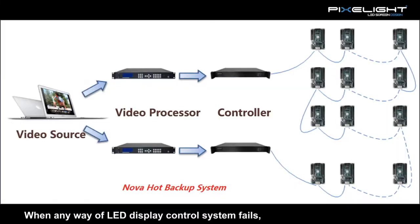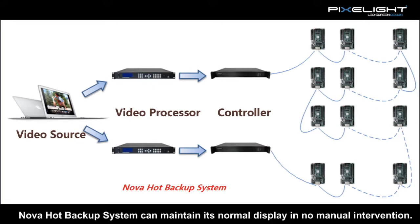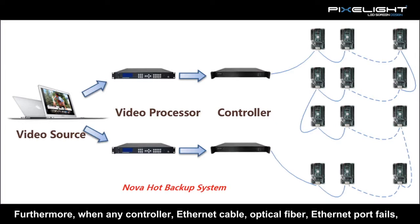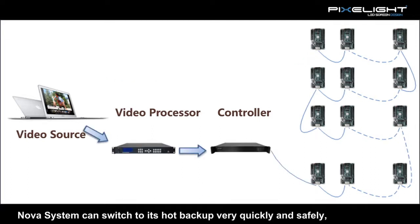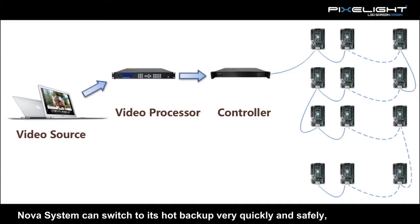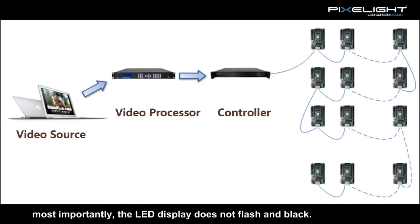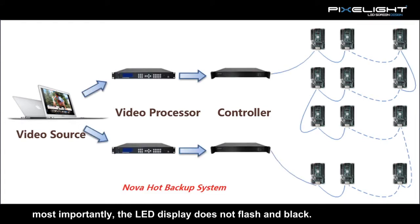If any LED display control system fails, the NOVA hub backup system can maintain normal display with no manual intervention. Furthermore, when any controller Ethernet cable, optical fiber, or Ethernet port fails, NOVA system can switch to its hub backup very quickly and safely. Most importantly, the LED display does not flash or go black.